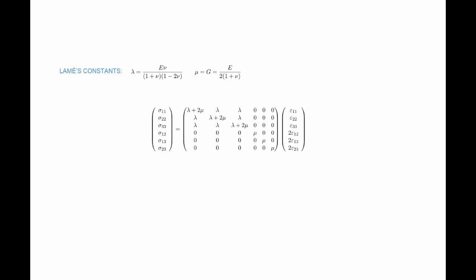Lamé's constants are two constants introduced to simplify the stress-strain relationship. Replacing E*Poisson's ratio divided by (1 plus Poisson's ratio)(1 minus 2*Poisson's ratio) with lambda, and replacing E divided by 2(1 plus Poisson's ratio) with G (or mu), simplifies the relationship considerably, making it look very clean when relating stresses to strains.